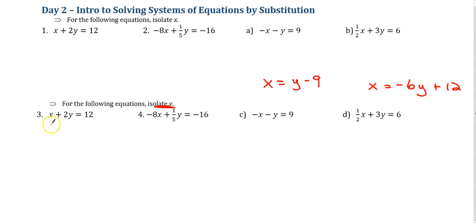So if I'm taking this first equation and I'm trying to get y by itself, I got to get rid of the x and the 2. I'm going to get rid of the x first. Minus x minus x. 2y equals negative x plus 12. I can't combine those because they're not like terms. Now I got to divide by 2, divide by 2, divide by 2. And I end up with y equals negative 1/2 x plus 6.